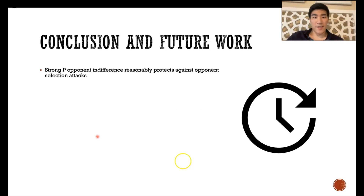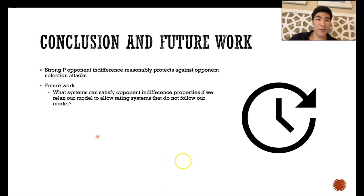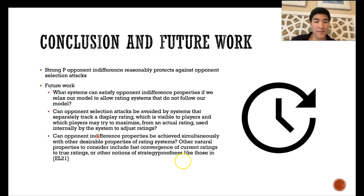In conclusion, we found that strong P-opponent indifferent rating systems reasonably protect against opponent selection attacks and have some practical utility. Looking towards the future, we see three ways to expand on this work. One is to relax our model to include rating systems that are not memoryless, not zero-sum, or not one-dimensional, and see if we can satisfy some notion of opponent indifference. Two, suggested by an anonymous reviewer, is to have a separate display rating you have full control over and an actual rating used to rank you, and see if this allows for protection against opponent selection attacks. Third, we need to consider opponent indifference along with other desirable properties, maybe like fast convergence as in Glicko, or other notions of strategy-proofness.